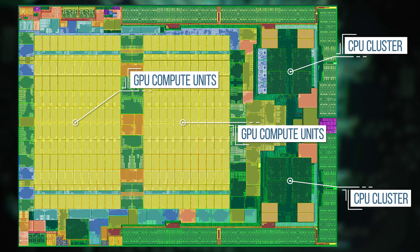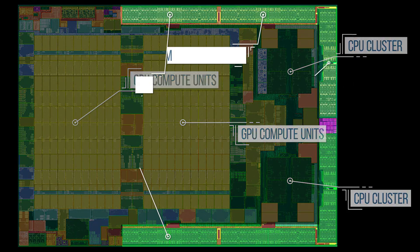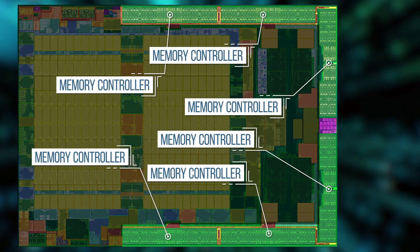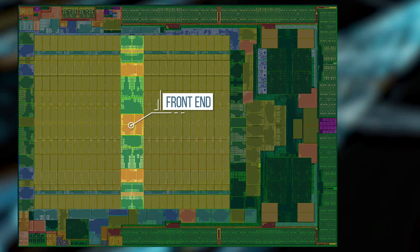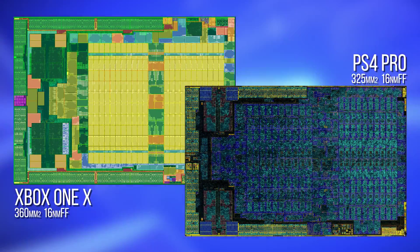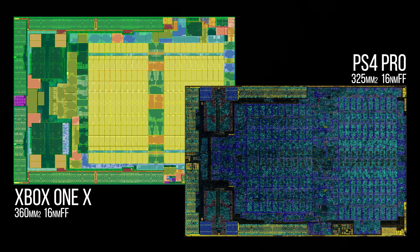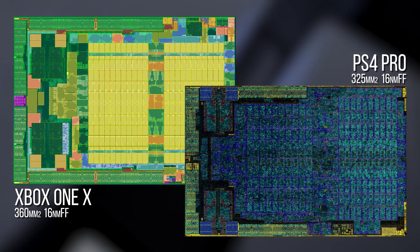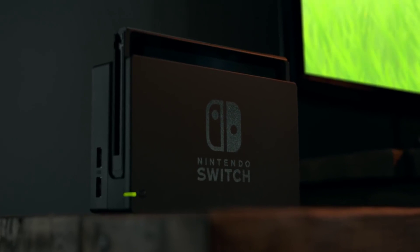You can see the GPU compute units, the CPU cores, the GDDR5 memory controllers, and the front-end fabric. Why is this useful? Measuring the area of the silicon used gives us some idea of how much it costs to produce and sets the limits of how far a console manufacturer can go in producing a cost-effective console.